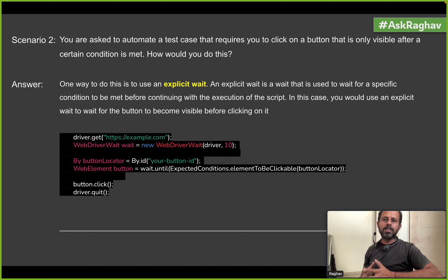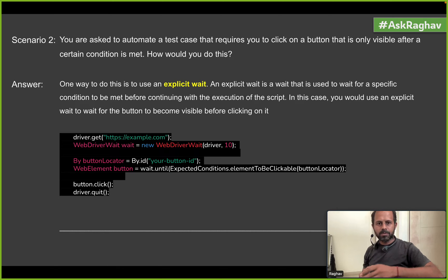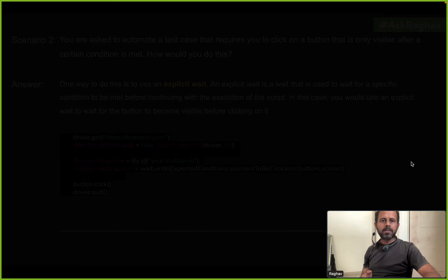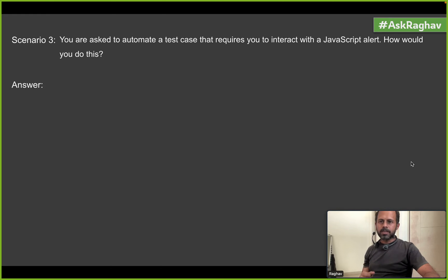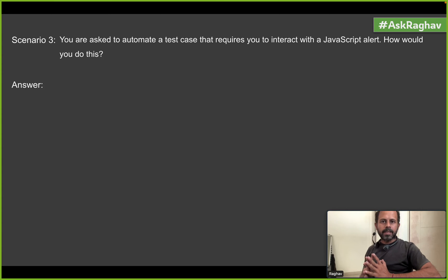Then you can click on the button using that example. Whenever you have such scenarios, always remember to use explicit wait with expected conditions. Let us move to the third scenario: you are asked to automate a test case that requires you to interact with a JavaScript alert. How would you do this?